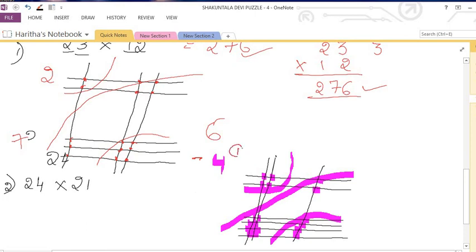So here you will get a carry and here 0. And here 1, 2, 3, 4. So the answer will be 504.